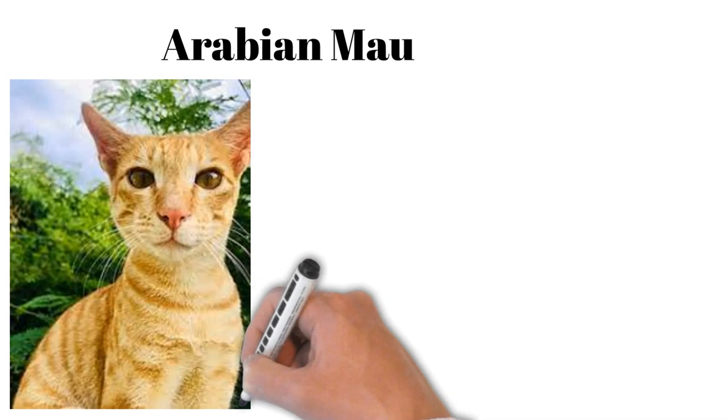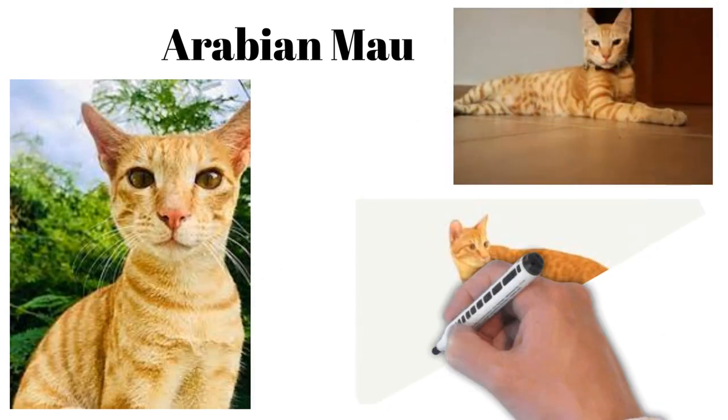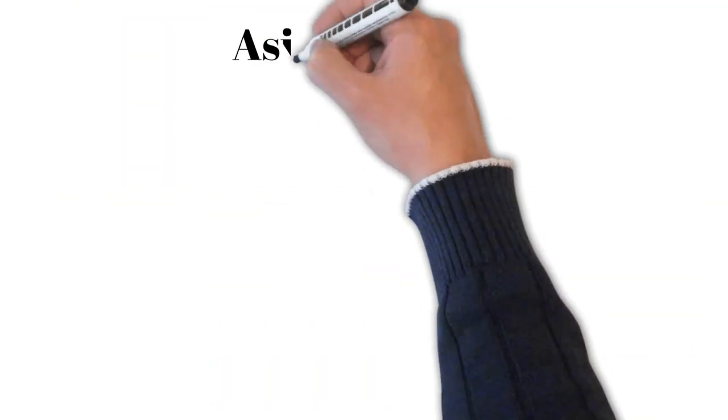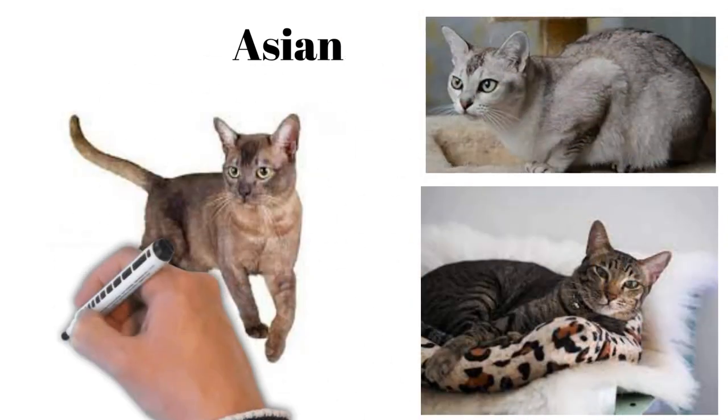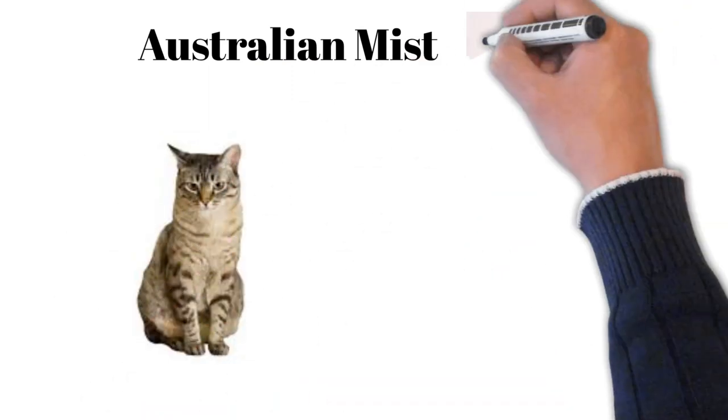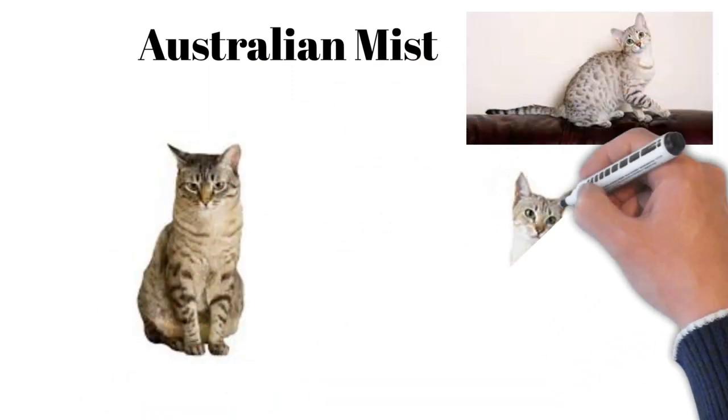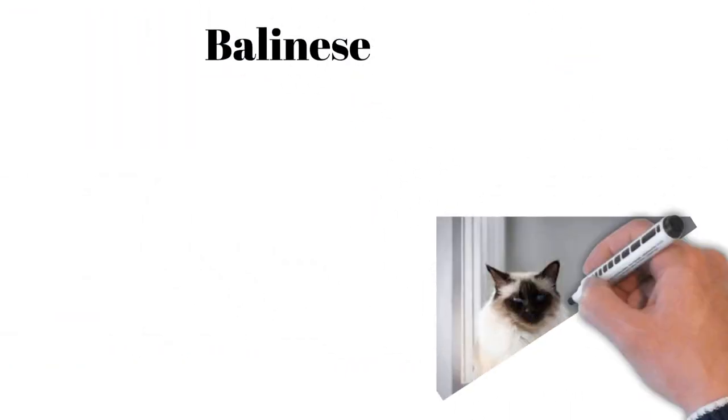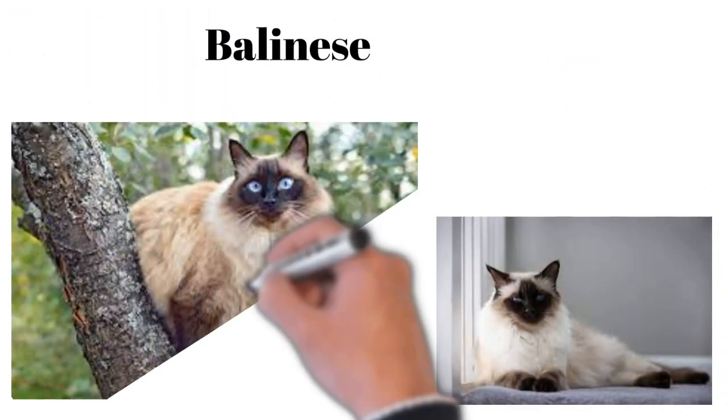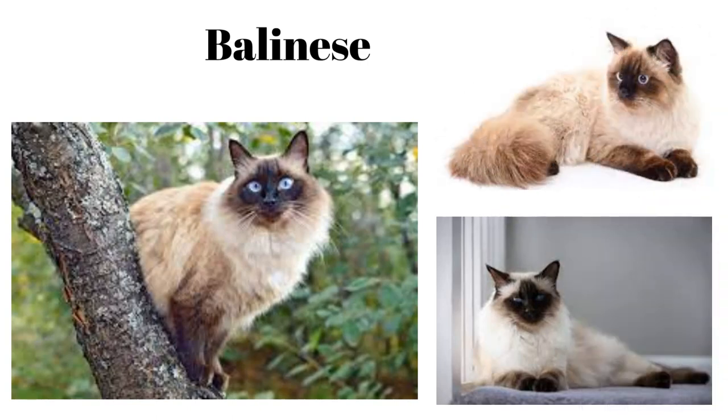Arabian Mau: desert origin, sturdy and healthy, affectionate and loyal. Asian: similar to Burmese, variety of colors, affectionate, playful. Australian Mist: developed in Australia, gentle, tolerant, enjoys human company. Balinese: long-haired, Siamese-looking, vocal, intelligent and sociable cats.